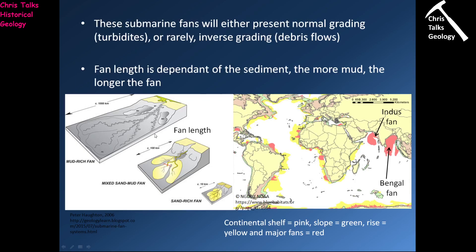Here in the Bay of Bengal, we have the Ganges exiting into the Indian Ocean, and what we have is this absolutely gargantuan fan. This is all very fine, muddy material being dumped into the marine environment by the Ganges. The more mud-rich your fan is, the further it will go, and you can see that this fan is absolutely massive.